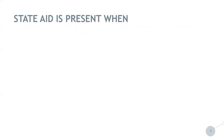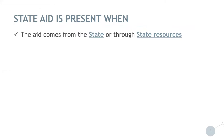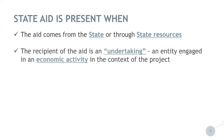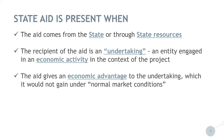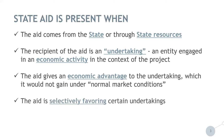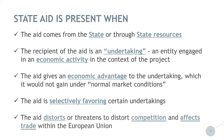State Aid is present in a Central Europe project when the aid comes from the State or through State resources — this is always the case for the Interreg Central Europe Programme — when the recipient is an undertaking, when the undertaking receives an economic advantage it would not gain under normal market conditions, when the aid selectively favours certain undertakings, when the aid distorts or threatens to distort competition, and when the aid affects trade within the European Union, which is usually so since ETC programmes generally do not have purely local effects.